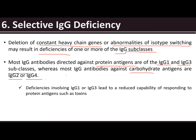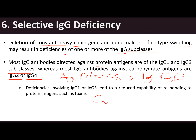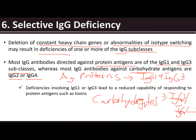Most IgG antibodies directed against protein antigens are of the IgG1 and IgG3 subclasses, whereas most IgG antibodies against carbohydrate antigens are IgG2 or IgG4. So if the antigen is made up of proteins, the subclasses most active against them are IgG1 and IgG3. If it's carbohydrates, the most active are IgG2 and IgG4.